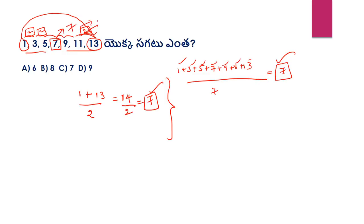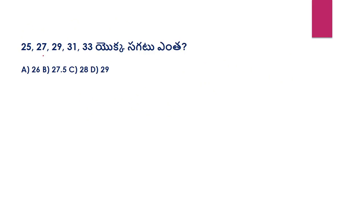So we call the answer using the average technique: first number plus last number divided by 2. Let's try another example: 25, 27, 29, 30, 33. The difference is the same — 2. So the answer is 29. Using first plus last: 25 plus 33 divided by 2 equals 58 divided by 2 equals 29.